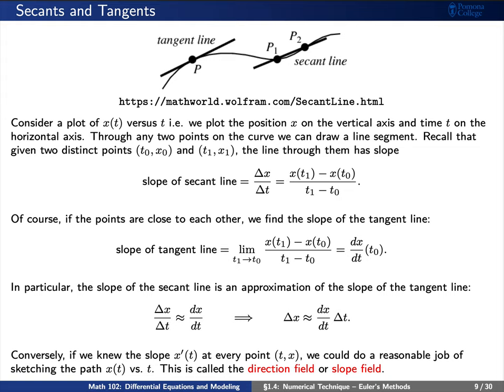Remember that the concept is we'd like to approximate tangent lines by using secant lines. Say that we have a curve x that we'd like to plot as a function of time t. If we're given two points, say perhaps t0, x0 and t1, x1, we can compute the slope of the line through these two points.